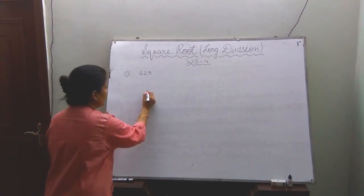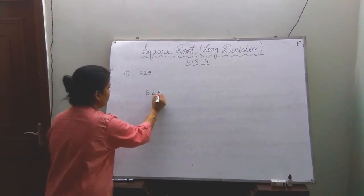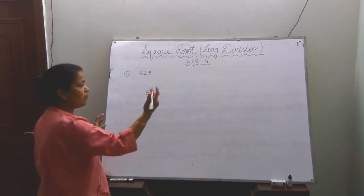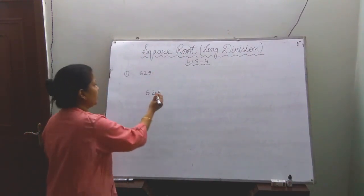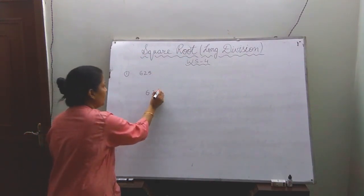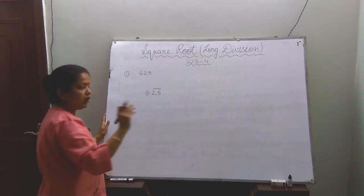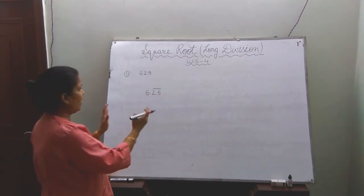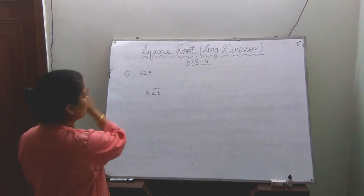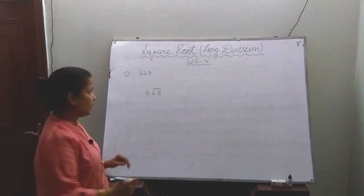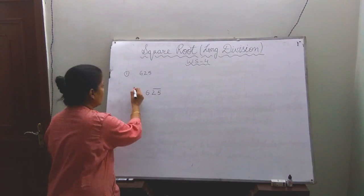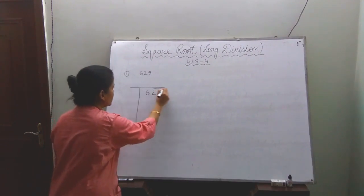First of all you will write 625, and from the right side you will make the pair. Always start from the right side and move towards the left side. You have to remember this first step.